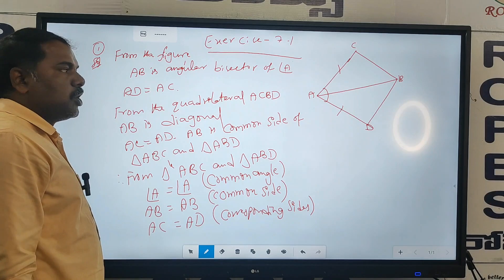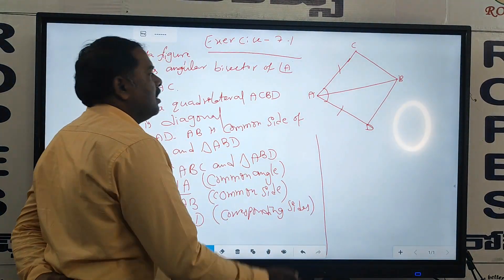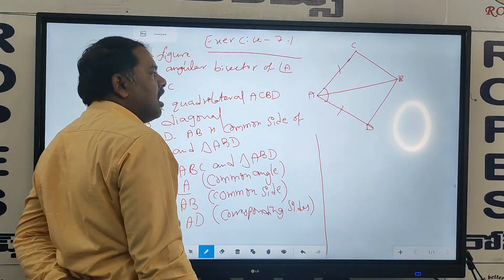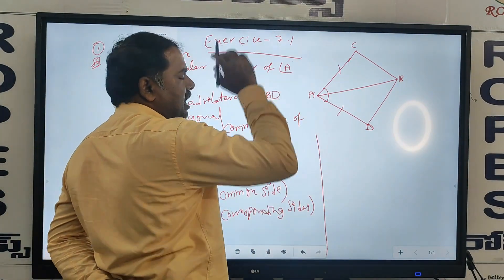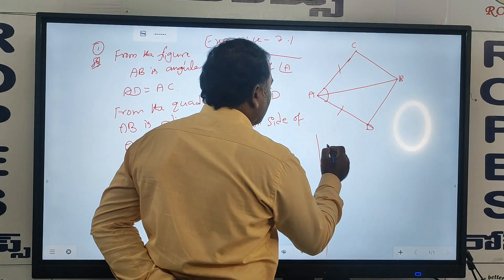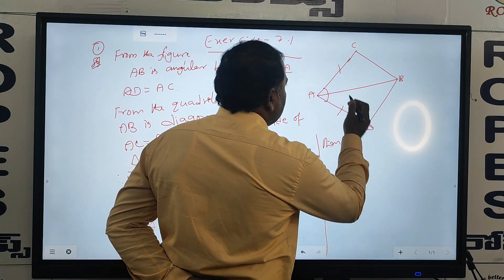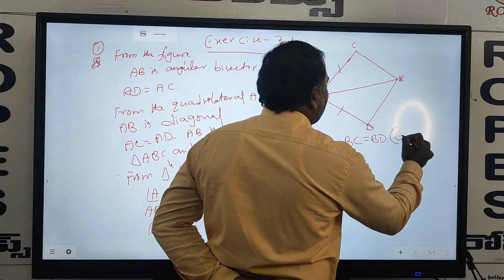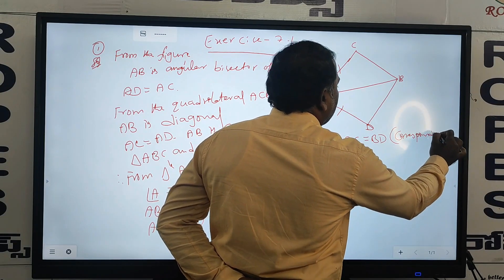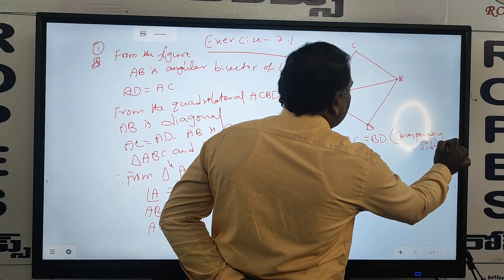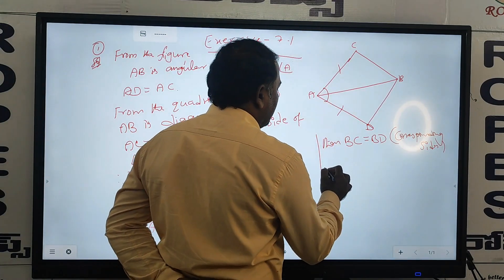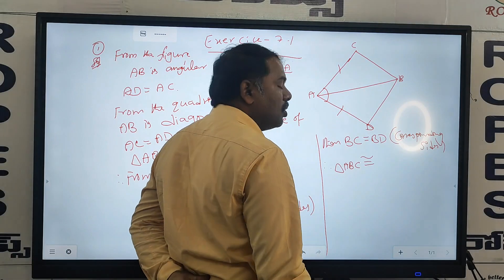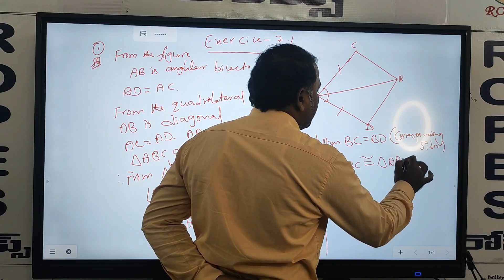So here: angle A is equal to angle A, AC is equal to AD, and AB is equal to AB. Then automatically the third side is equal. Therefore BC is equal to BD — corresponding sides. So triangle ABC is congruent to triangle ABD.